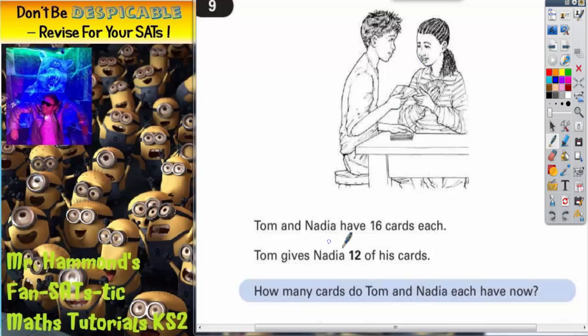Question 9. Tom and Nadia have 16 cards each. There you can see in the picture Tom and Nadia playing this game of cards. It says that Tom gives Nadia 12 of his cards. How many cards do Tom and Nadia each have now?